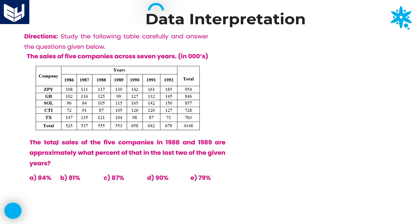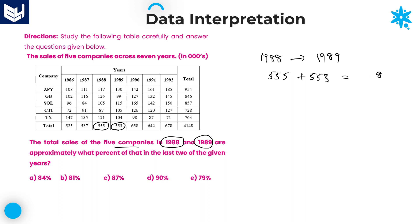Third question: the total sales of all companies in 1988 and 1989 — that particular value is approximately what percent of that in the last two years of the given years? In 1988 total is 555 and 1989 total is 553. Adding these: 555 + 553 = 1108. The last two years are 1991 and 1992.